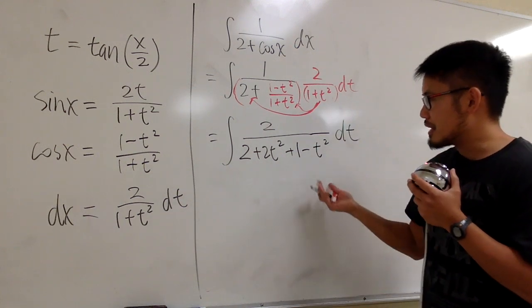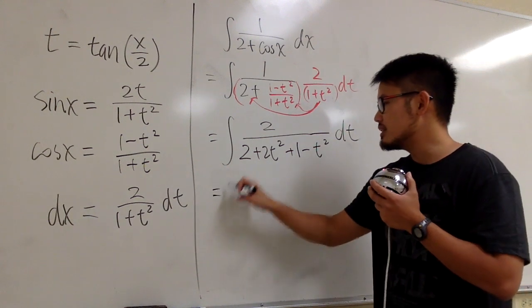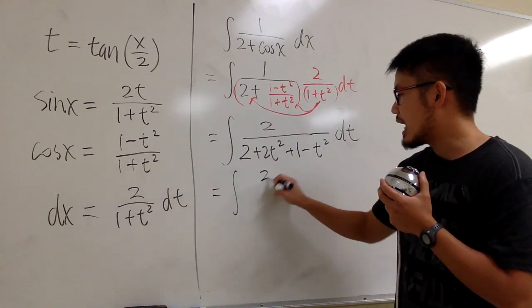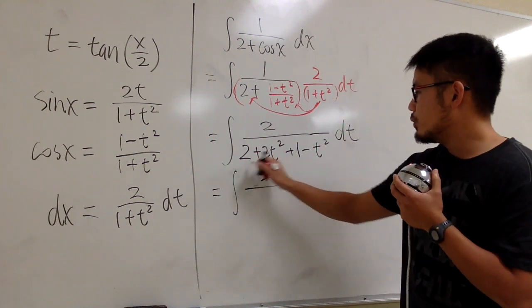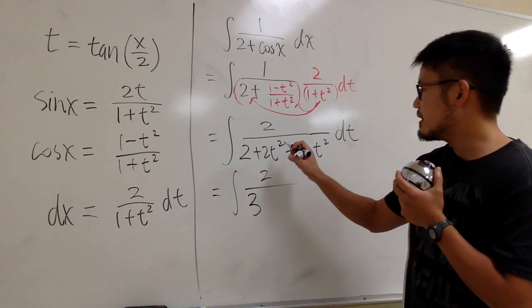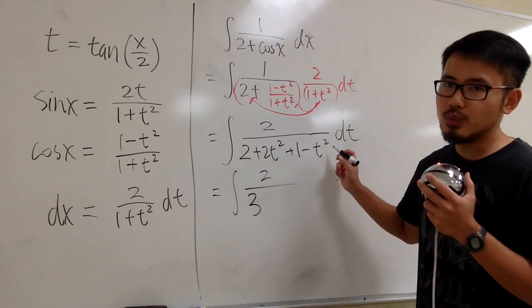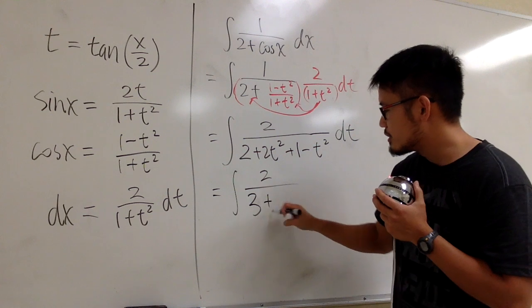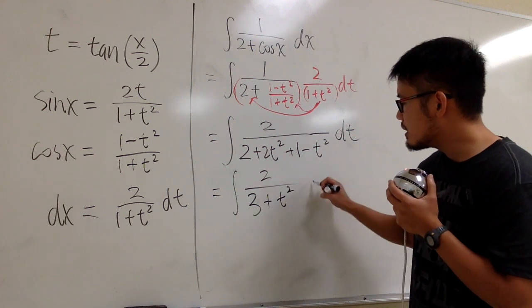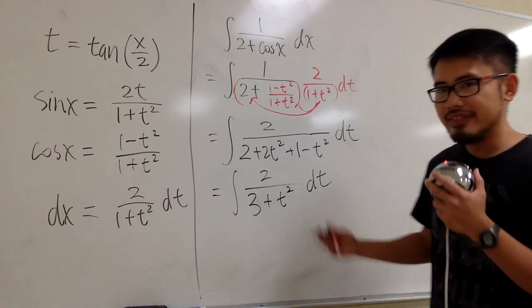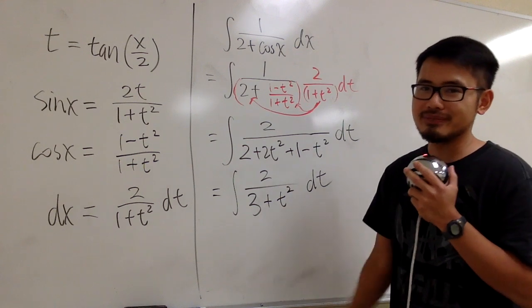And of course, on the bottom, we can combine the terms. So all together, this is integral 2 on the top over 2 plus 1, which is 3. And then 2t squared minus t squared, we have positive t squared, right? So we have plus t squared dt. And now, is this something that we can integrate?